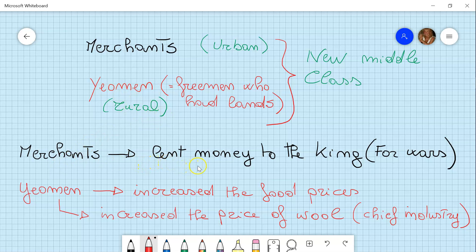The merchants started to become richer and richer because they lent money to the king in order to organize wars. Because if you remember, starting from Henry II, the king didn't have his personal possibility to call barons on wars, but he had to pay for his private soldiers. And the yeomen increased their situation, they improved their situation because they increased the food prices and they also increased the price of wool, because the chief industry in England was that of the wool.